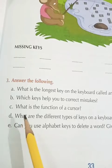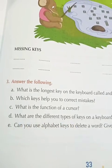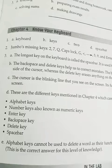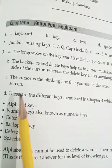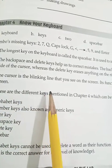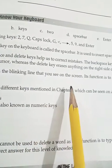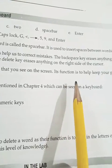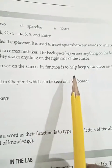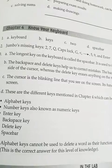Number C: What is the function of a cursor? The cursor is the blinking line that you see on the screen. Its function is to help keep your place on the screen.